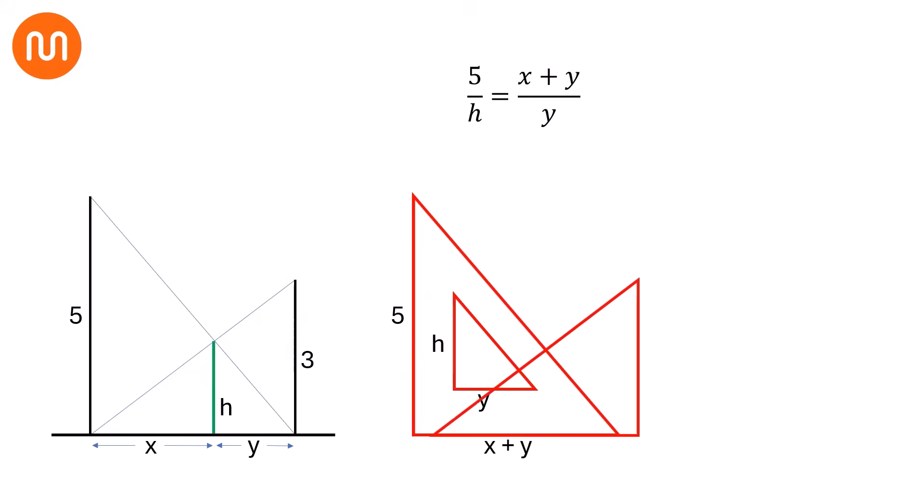Again, in this red triangle, the base is x plus y and the height is 3. And in this triangle, the base is x and the height is h. And both are similar triangles. So we can write 3 over h is equal to x plus y over x.